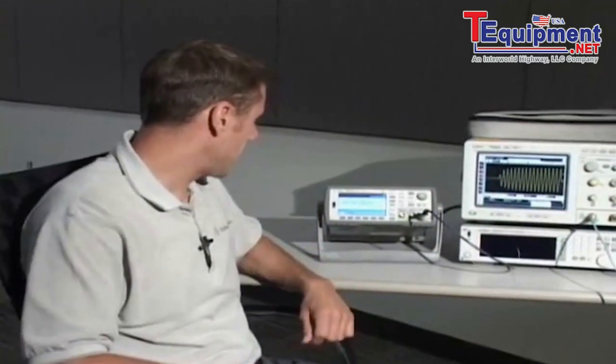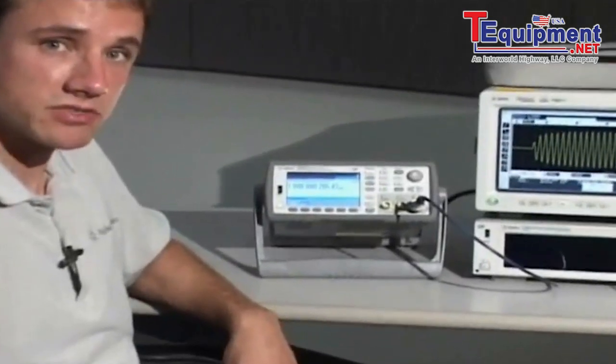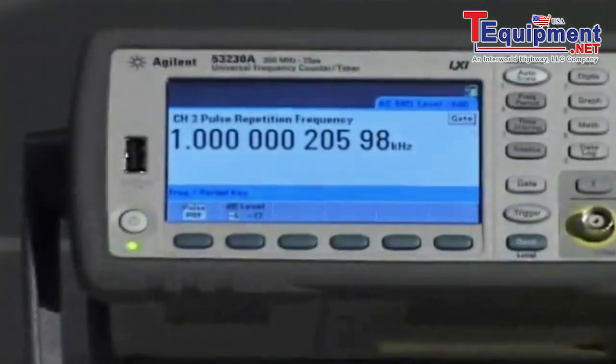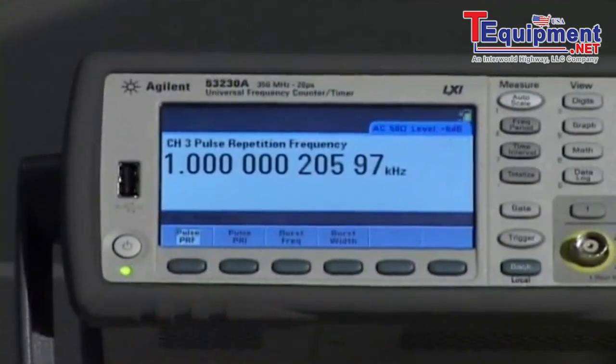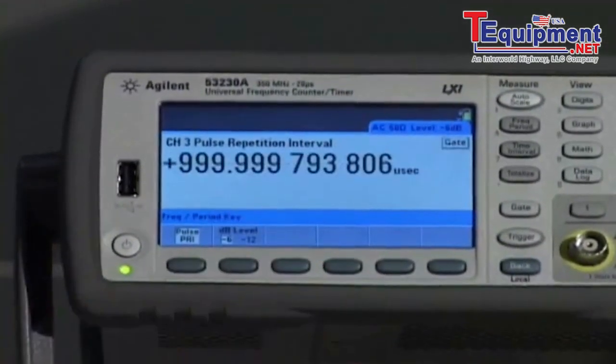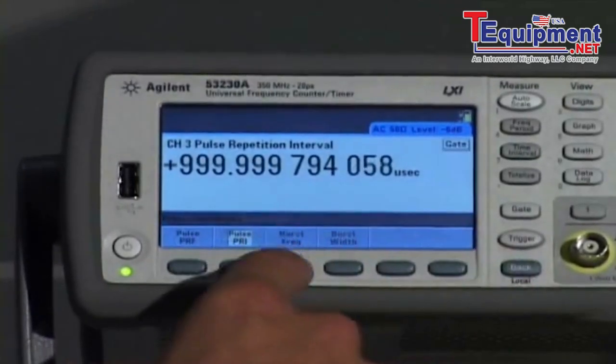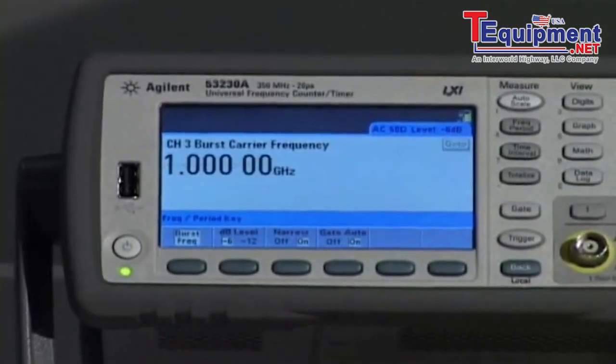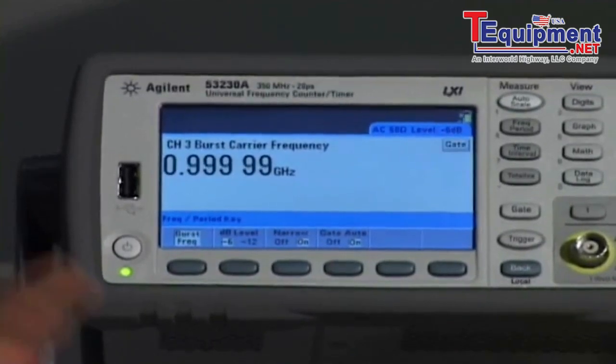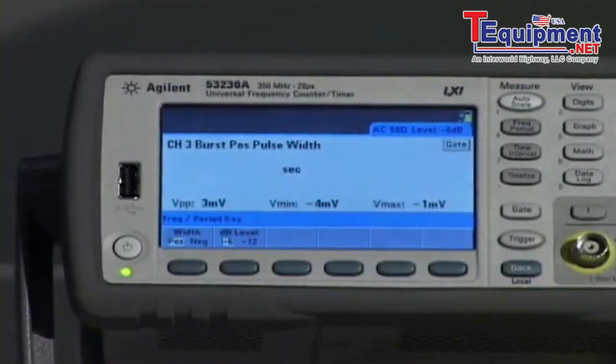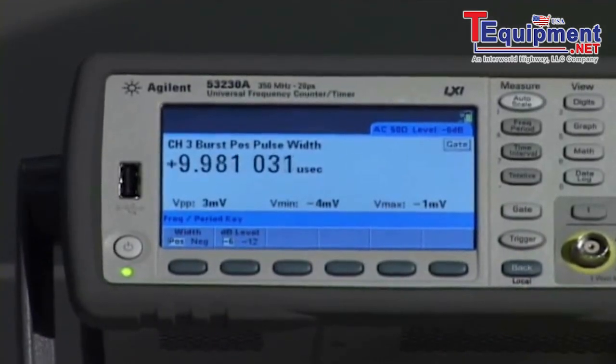So here's the measurement. I have the pulse repetition frequency displayed right now at 12 digits of resolution. If I switch over to the pulse repetition interval, which is just the inverse of the measurement we just saw, then to the pulse frequency or carrier frequency, we can see 1 gigahertz. And then finally, the burst width, which is approximately 10 microseconds.